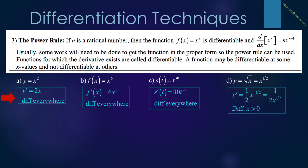In problems a through d, we take the derivative and determine where the function is or is not differentiable. In a, y equals x squared: y prime equals 2x, differentiable everywhere. In b, f of x equals x to the sixth: f prime of x equals 6x to the fifth, differentiable everywhere. In c, s of t equals t to the 30th: s prime of t equals 30t to the 29th, differentiable everywhere. In d, y equals the square root of x, rewritten as x to the 1/2: y prime equals 1/2 x to the negative 1/2, or 1 over 2x to the 1/2. This is differentiable only for x greater than 0.